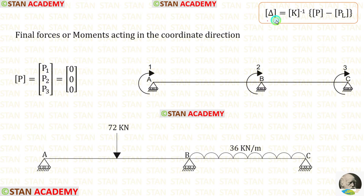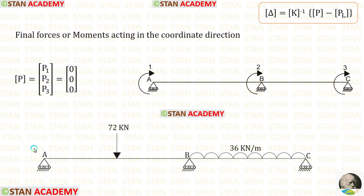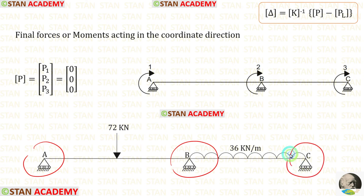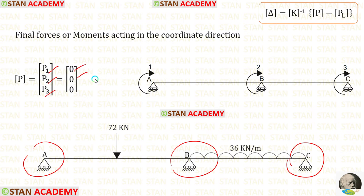Now let us find the P matrix. Our coordinates are at points A, B, and C. In these points there are no applied moments. So P1, P2, and P3 will all be 0.